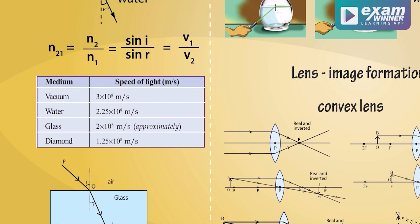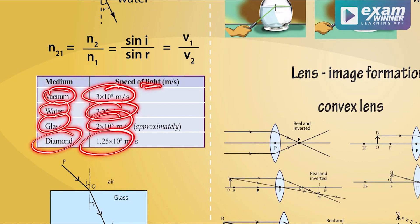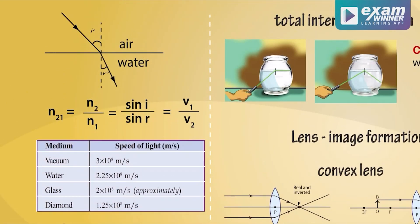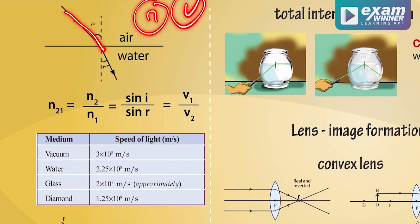What is the speed of light in different media? In a vacuum or air, light travels fastest. In water, the speed is lower. In glass it is lower still, and in diamond it is lowest. The refractive index relates to the velocity of light in that medium.